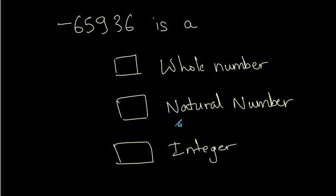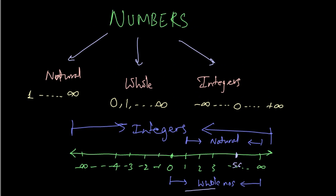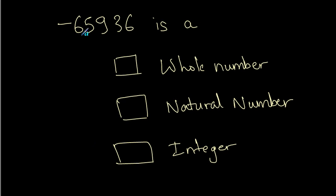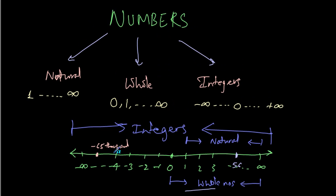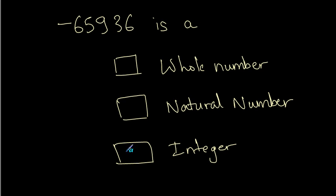Now let us solve another question. Minus 65936 — is it a whole number, a natural number, or an integer? Referring to the number scale that we have drawn, negative numbers are on the left hand side of 0, and minus 65936 is going to lie somewhere here. As our number scale says, it is going to come under integers. So, the answer is: minus 65936 is an integer.